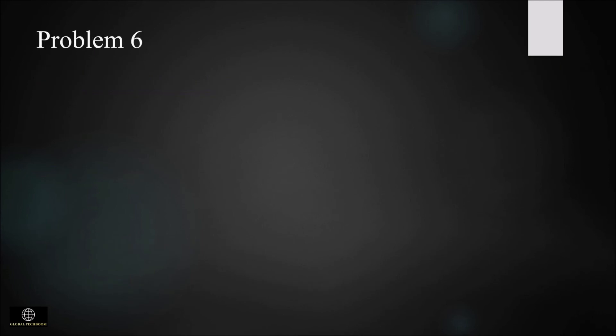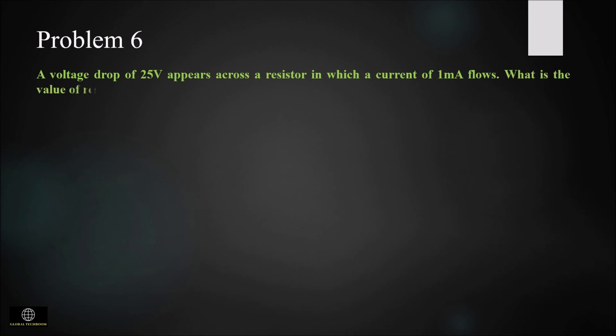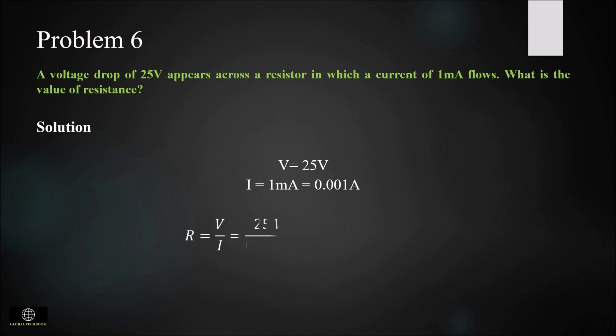In this problem we have to find the value of resistance where a voltage drop of 25 volt appears across the resistor in which a current of 1 milliampere flows. Using R = V/I = 25 volt / 0.001 ampere, we get a value of 25 kilo ohm.